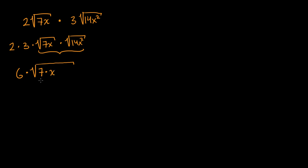Seven times x, and then let me factor 14. 14 is two times seven, times x squared. The reason why I didn't multiply it out — obviously we could have said x times x squared is x to the third, and seven times 14 is 98. But when you're trying to factor out perfect squares, it's actually easier if it's in this factored form, especially because from a variable point of view, you could view x squared as a perfect square already. And 14 is not a perfect square, seven isn't a perfect square, but seven times seven is.